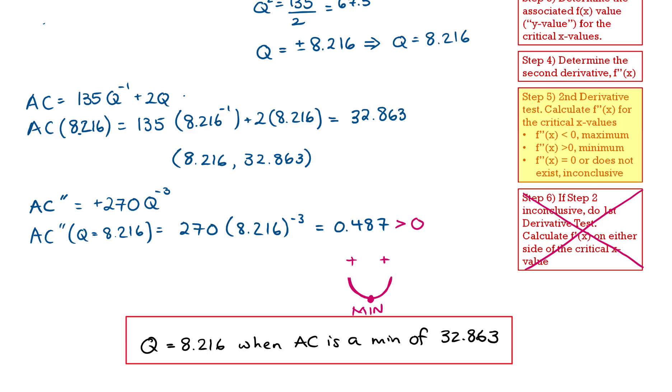And there we have it. We've completed our optimization process by determining at what quantity, at what production level, our average cost is at a minimum.